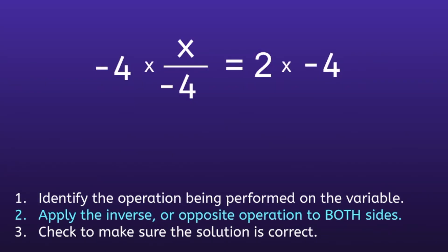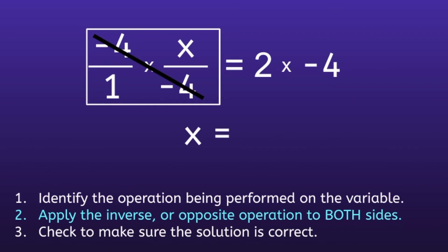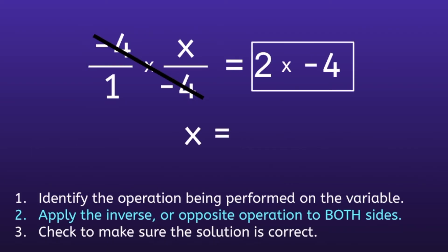If you said multiplying by negative 4, you are correct. So we are going to multiply both sides by negative 4. On the left side, we can change negative 4 into a fraction by making the denominator 1. Now with two fractions, we can cancel out the negative 4s, which leaves us with 1 times x, or just x. On the right side, 2 times negative 4 is equal to negative 8.